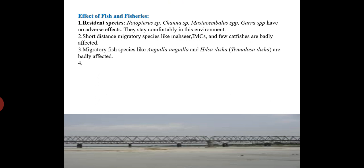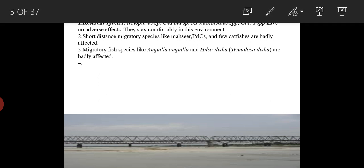Regarding the effect on fish and fisheries: a few resident species like Notopterus, Channa, Mastacembelus, and Garra species have no adverse effect and stay comfortably in this environment. Short-distance migratory species like Mahseer — Tor tor, Tor khudree, Tor putitora, Tor mosal — Indian major carps, and a few catfishes are badly affected. Migratory fish like Anguilla and Hilsa are also badly affected.